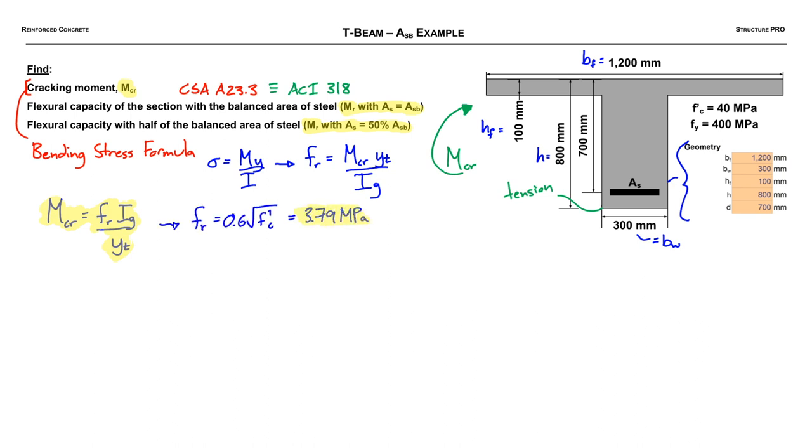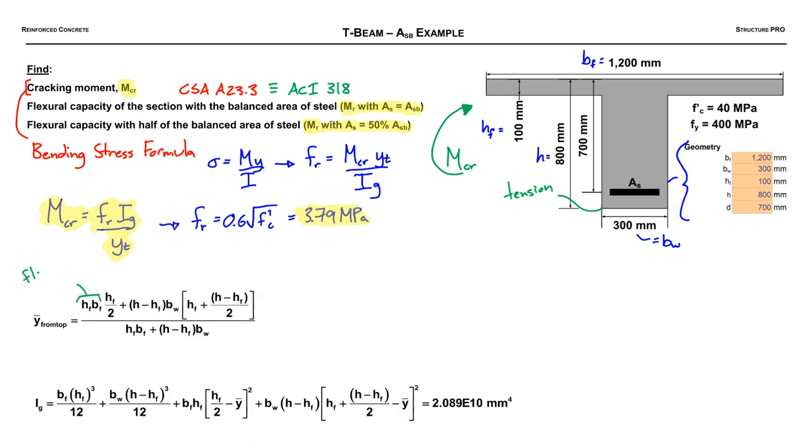Alright, so I went ahead and calculated the rupture stress for the concrete. It's around 4 MPa. Next up is Y bar from the top of the concrete. So this is just a weighted average of the centroids of the flange and the web. We just take their areas times them by their centroids, divide it by the total area, just your classic weighted average.